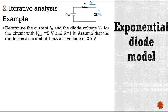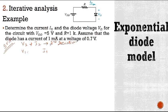Now we start the third iteration, which proceeds in the same way. The values of v2 and i2 obtained in the second iteration become v1 and i1 for the third iteration. So v1 equals 0.735 volts and i1 equals 4.264 milliamperes. Since v1 is also vd, we proceed to find i2 next.